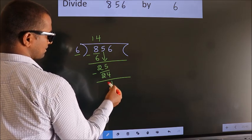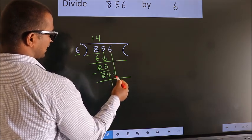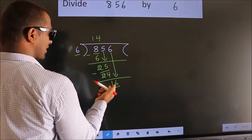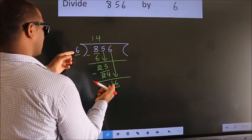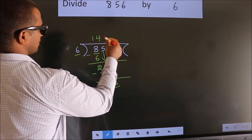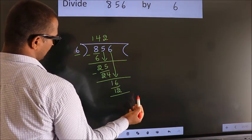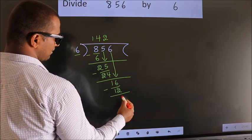After this, bring down the beside number, so 6 down. So 16. A number close to 16 in 6 table is 6 2s 12. Now we subtract. We get 4.